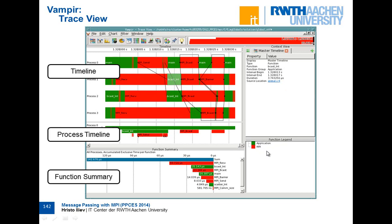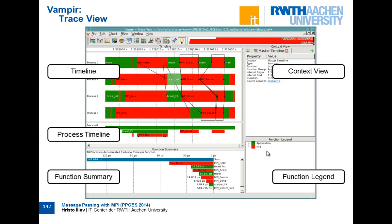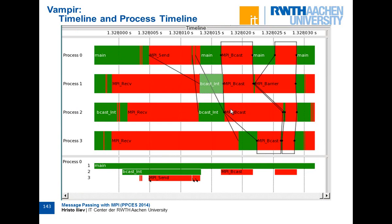This is the timeline and the process timeline. Each message is represented by a line going from the sender to the receiver. There is the MPI receive and the MPI send, and a line goes from the beginning of MPI send and ends at the end of MPI receive. It always goes from left to right — the sender is always on the left side and the receiver is always on the right side of the link.